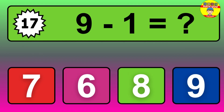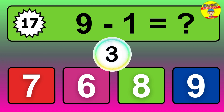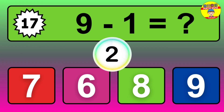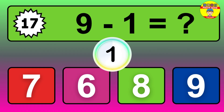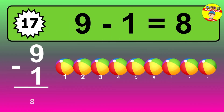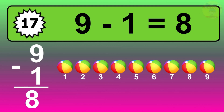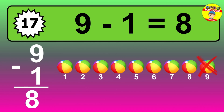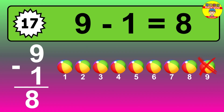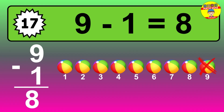Question 17. 9 minus 1 equals what? The answer is 9 minus 1 is 8. Let's count it: 1, 2, 3, 4, 5, 6, 7, 8.